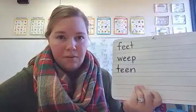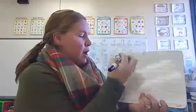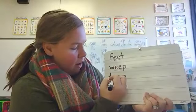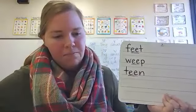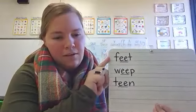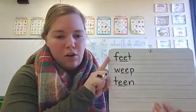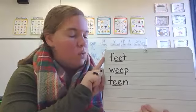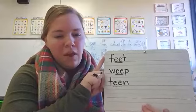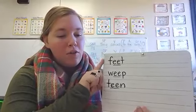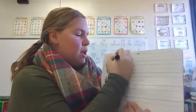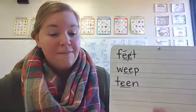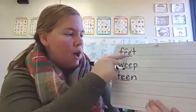And how do we code digraphs? We underline them. So go ahead and underline digraph E-E in feet, weep, and teen. Now look at the word feet — do both of the letters E make a sound? No, that's right. We say the E sound only once. So we're going to code the first E with a macron and cross out the second E. We don't say F-E-E-T, we say feet. Only one E is making the sound.